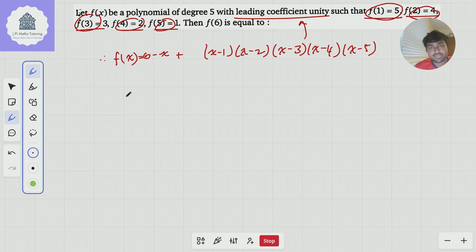And that's very simple. What is f of 6 equal to? f of 6 is just 6 minus 6, which is 0, plus 6 minus 1 is 5. 6 minus 2 is 4 times 3 times 2 times 1, which is 5 factorial, or in other words, 120.